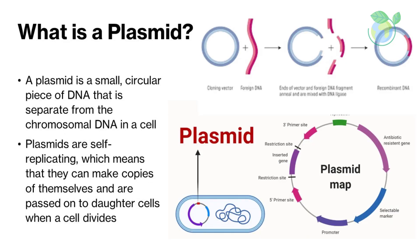What is a plasmid? A plasmid is a small, circular piece of DNA that is separate from the chromosomal DNA in a cell. Plasmids are self-replicating, which means that they can make copies of themselves and are passed on to daughter cells when a cell divides.